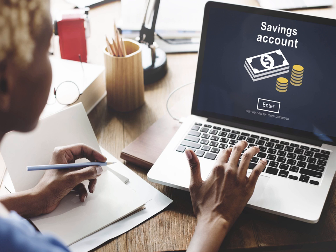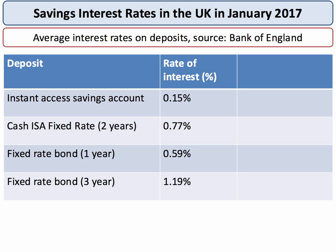Looking at the other side of the interest rate equation — the interest rate on savings accounts — the story is pretty bad news for savers in the British economy. I've taken four examples of different types of deposit or savings accounts. If you have money in an instant access account where you can withdraw your money without penalty immediately, you're getting a pretty pathetic rate of interest — an average of 0.15% across the market. If you want to lock your money in for two years with a cash ISA, you can get 0.77%. Happy days.